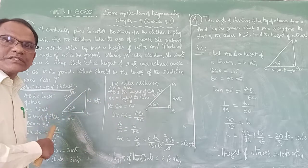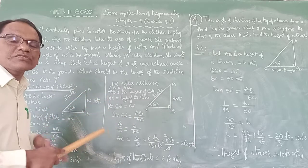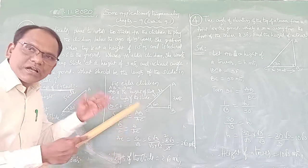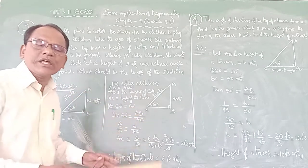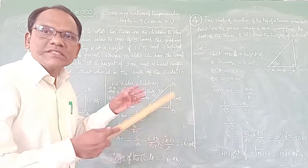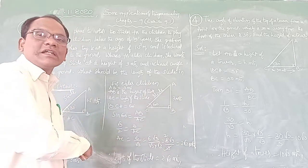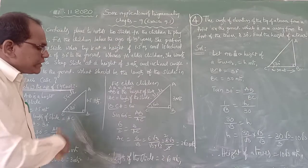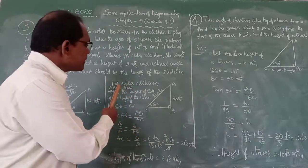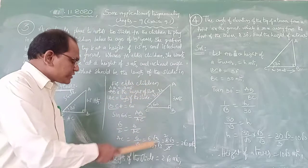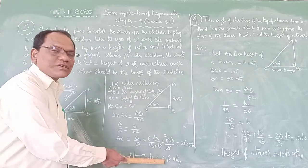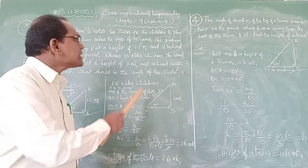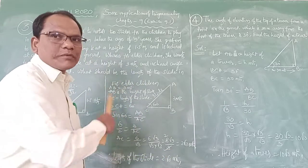So we have the two cases: the first case for children below 5 years — the length of the slide is 3 meters. The second case for elder children — the length of the slide is 2√3 meters. This completes the third problem.